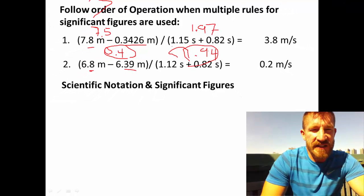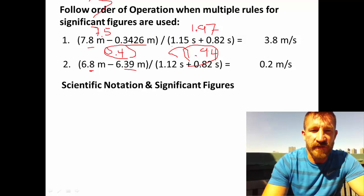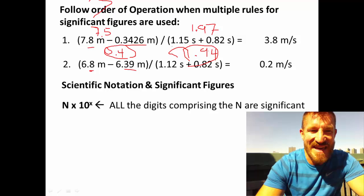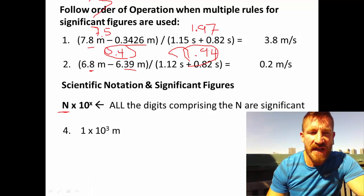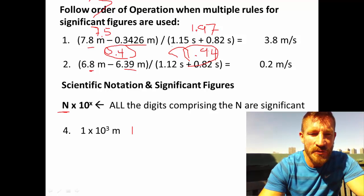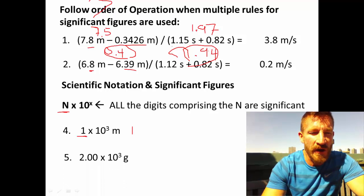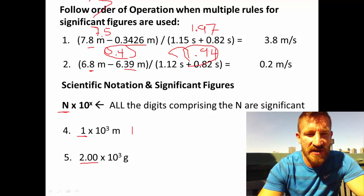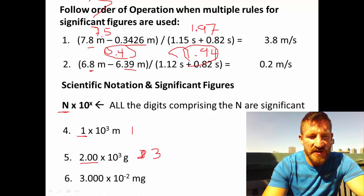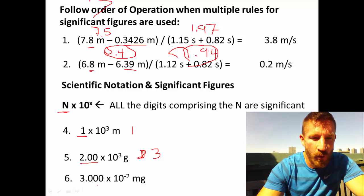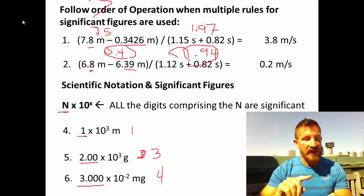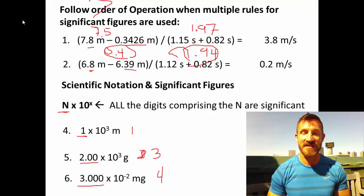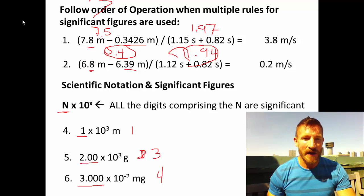The last topic is scientific notation and significant figures. In scientific notation, only the coefficient at the front is used to count significant figures — the power of 10 just indicates the magnitude. For example, 1.0 times 10 to the third has 2 significant figures, 2.00 times 10 to the third has 3 significant figures, and 3.000 times 10 to some power has 4 significant figures. This concludes calculations with significant figures and scientific notation. If you have any questions, let me know — see you in class tomorrow.